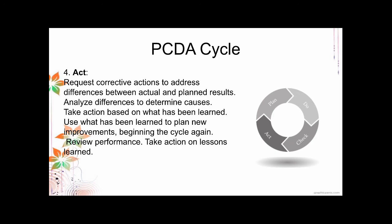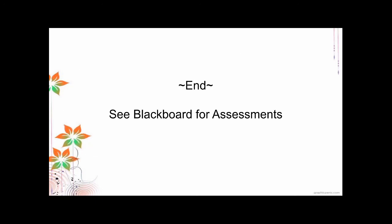Finally, Act — if there are problems, take corrective measures. Request corrective actions to address differences between actual and planned results, analyze differences to determine causes, and use what has been learned to plan new improvements, beginning the cycle again. For example, if a worker is accidentally infected in the laboratory, assess why and how it happened — whether it's a problem of the worker or operations — and introduce corrective measures to prevent it from happening again.